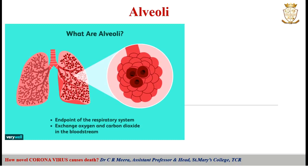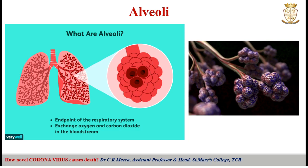The alveoli are flexible sacs in our lungs that inflate like small balloons as we inhale and deflate as we exhale. Gas exchange actually takes place in the alveoli, which are surrounded by a network of small blood capillaries. Oxygen in the air we breathe is transferred from the alveoli to the blood capillaries, and carbon dioxide from the capillaries is passed to the alveoli and expelled out as we exhale.